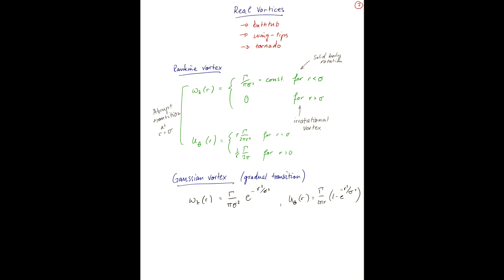If we draw this graphically, vorticity omega z for the Rankine vortex as a function of r, the vorticity takes one value up to sigma, and then it's zero. This top value here is gamma over pi sigma squared. That's Rankine. And the Gaussian one is just a smooth version of this. Sorry, there was a typo up here. This is of course sigma squared, not r squared.